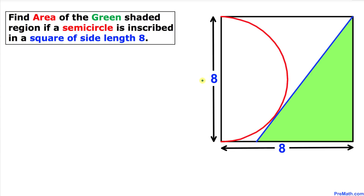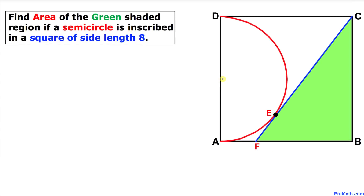Welcome to Pre-Math. In this video tutorial, we have a semicircle inscribed in a square of side length 8. This blue line is tangent to the semicircle. We are going to find the area of the green shaded region, so let's get started with the solution.